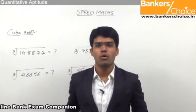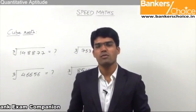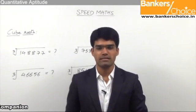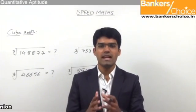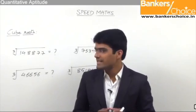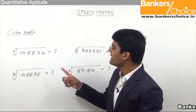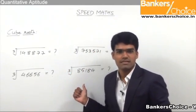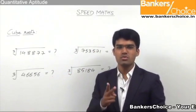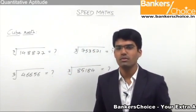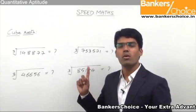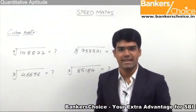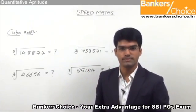I hope you understood how to find cube roots of a given number. Assuming you are clear with the method, let's see how quickly you can solve these four questions. Taking two seconds per question, you should be able to get all the answers in about 8 seconds. Your time starts now.